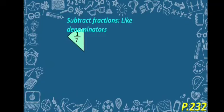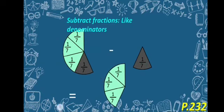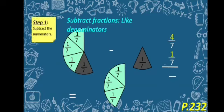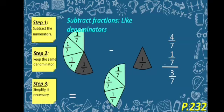Let's see our next example: 4 over 7 minus 1 over 7. So let's cross it, let's shade it, and this is what we have left. Step 1: subtract the numerators — 4 minus 1 equals 3. Step 2: keep the same denominator, which is 7, so we just slide it across. Our answer is 3 over 7. Step 3: simplify if necessary — 3 over 7 is already in its lowest term, so we don't need to simplify.